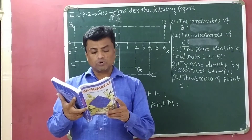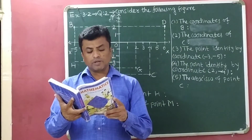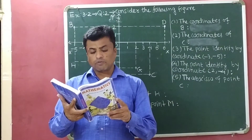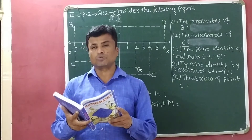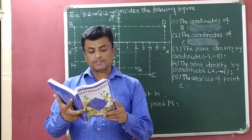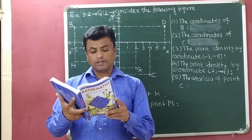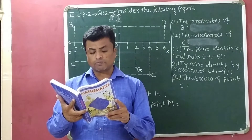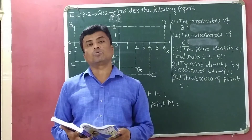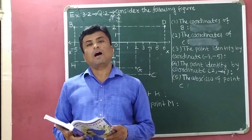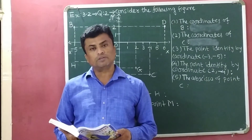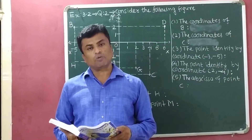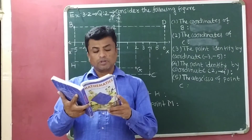Question number 2: What is the name of each part of the plane formed by these two lines? The name of each part of the plane formed by these two lines are quadrant 1, quadrant 2, quadrant 3, and quadrant 4.